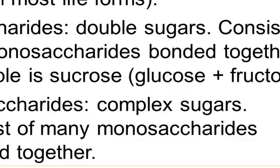We're not going to spend much more time on monosaccharides and disaccharides. Rather, the majority of our time on carbohydrates is going to be spent looking at polysaccharides. Poly means many, so these are many sugars — simply known as complex sugars — where many monosaccharide monomers are linked together to form a long chain.